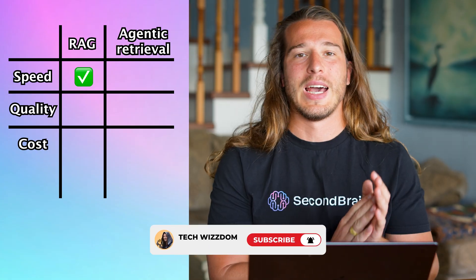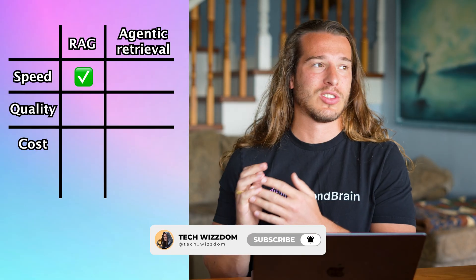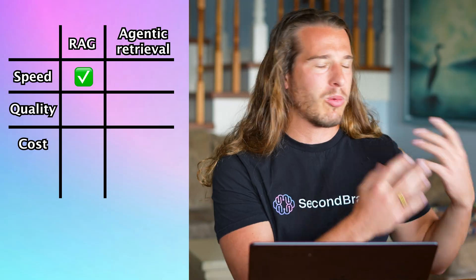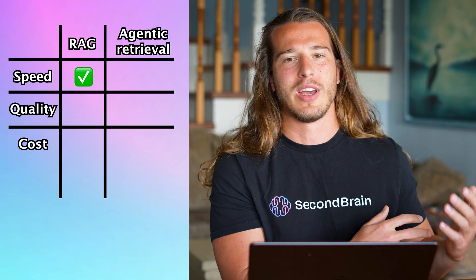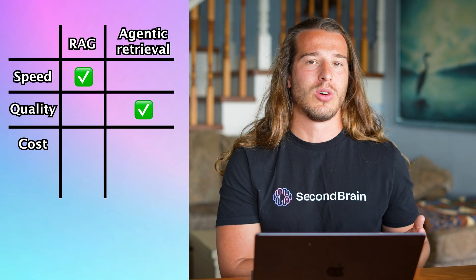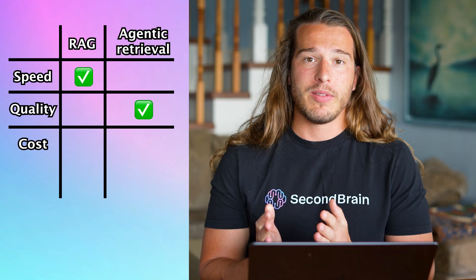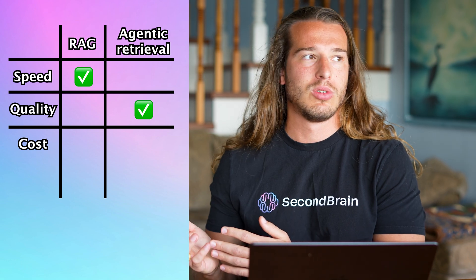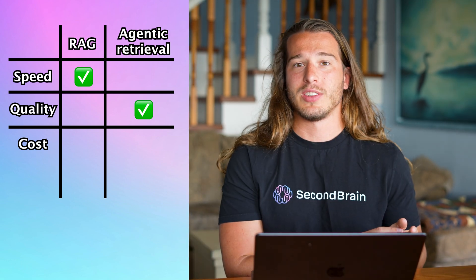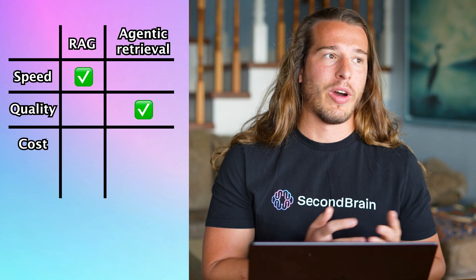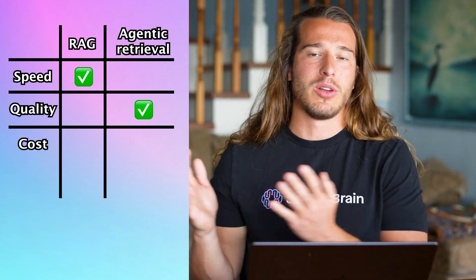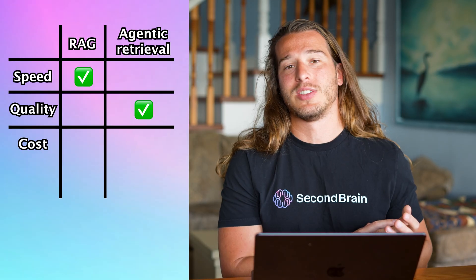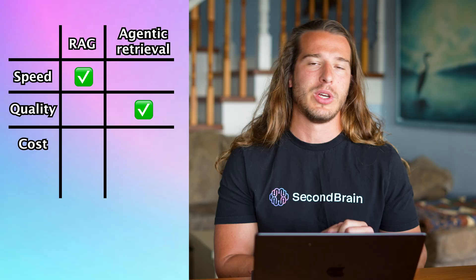Speed: RAG is the absolute winner. Its one-time similarity search is extraordinarily fast — obviously way faster than spinning up multiple agents, rewriting queries, doing additional checks and so on. Quality: the short answer is of course agentic retrieval. But even though the advice about entrepreneurship is split across 15 different chunks, those five might simply be enough, because you don't want an answer that takes 10 minutes to read. So even though RAG sounds a bit dumb compared to agents, in many cases it works very well and agents are simply overkill — but agents still definitely win here.